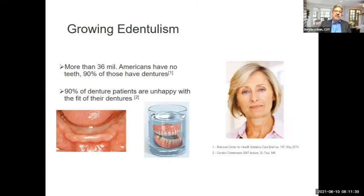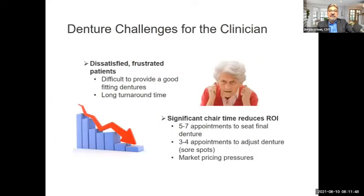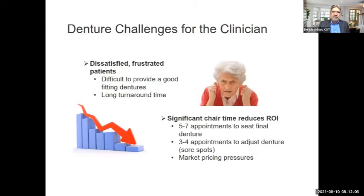There's a growing edentulism problem in this country, and 90% of denture patients are unhappy with the fit of their dentures. It's really important to get the protocol correct and use the correct materials. Patients are frustrated; they find it difficult to get well-fitting dentures, and there can be long turnaround times. But when you follow a certain protocol, use the right materials, and maintain collaboration and communication with the clinician, you have successful cases.